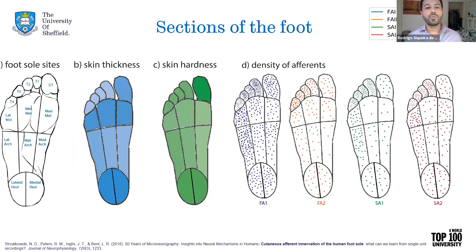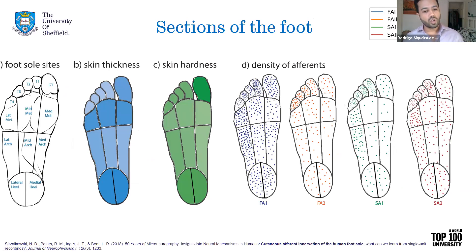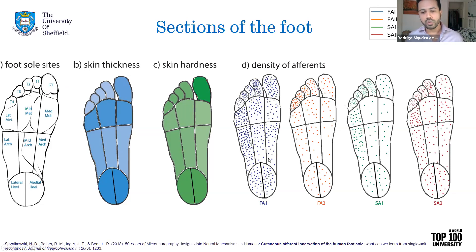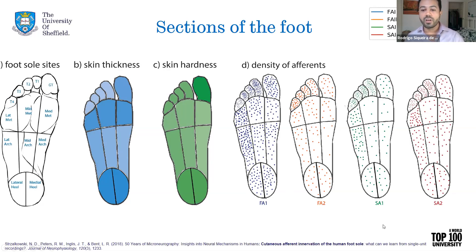As I mentioned, the skin of the foot is not like the skin of the hand — it's not homogeneous. As you can see on the blue and green foot sole plots, you have harder regions shown in darker colors and softer regions in lighter colors. The same goes for thicker and thinner regions. The heel is always the harder and thicker region versus the arch, which is softer and thinner. Also, the density of each one of those afferents varies in the skin, and this data also came from the microneurography study.